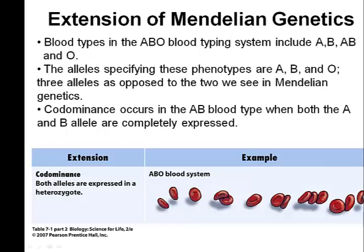The ABO blood typing system, as you likely realize, includes four different blood types: blood type A, B, AB, and O. There are three alleles that code for these four blood types — an allele for A blood, an allele for B blood, and an allele for O blood. This makes the ABO system an example of both co-dominance and multiple allelism.